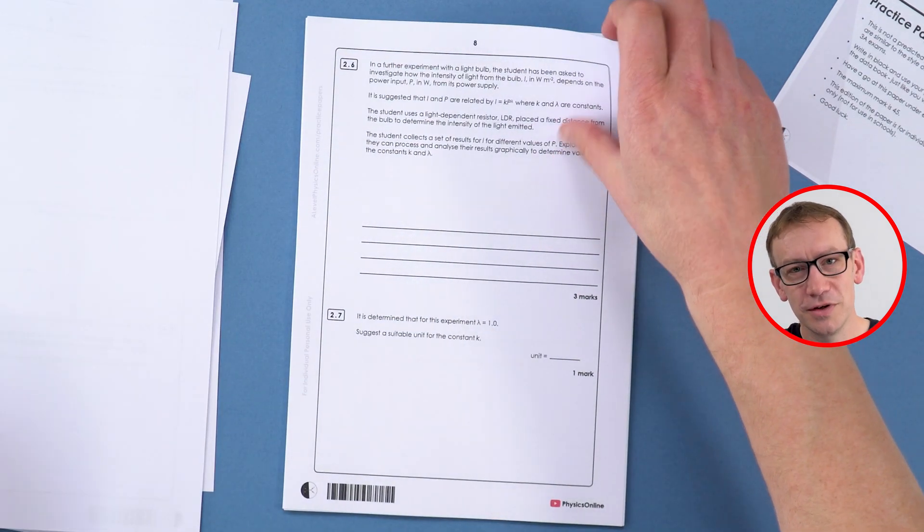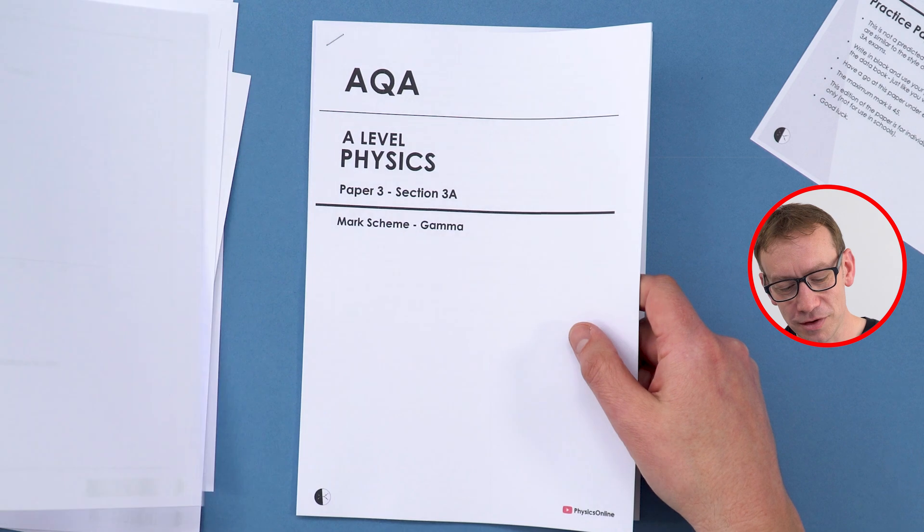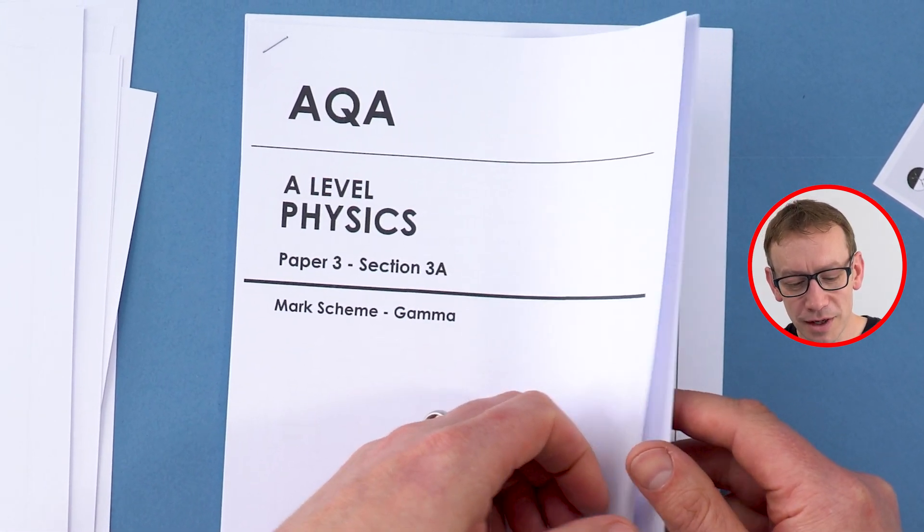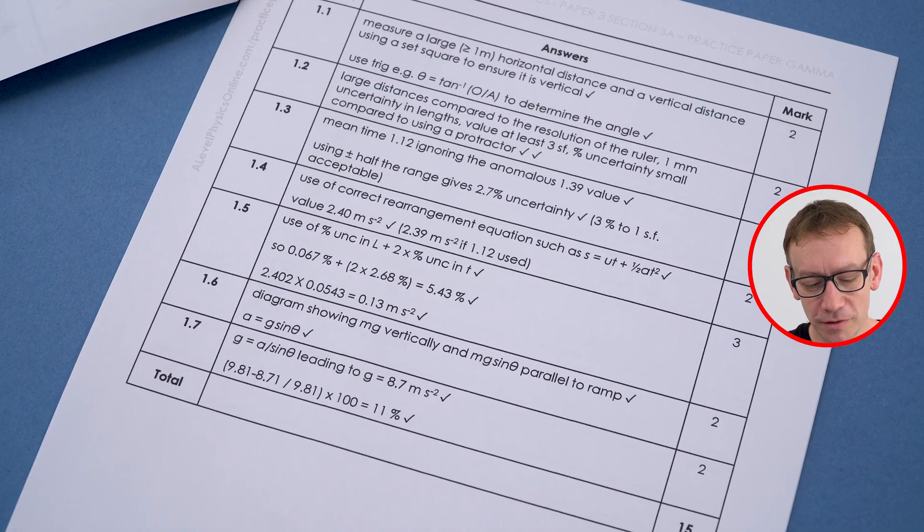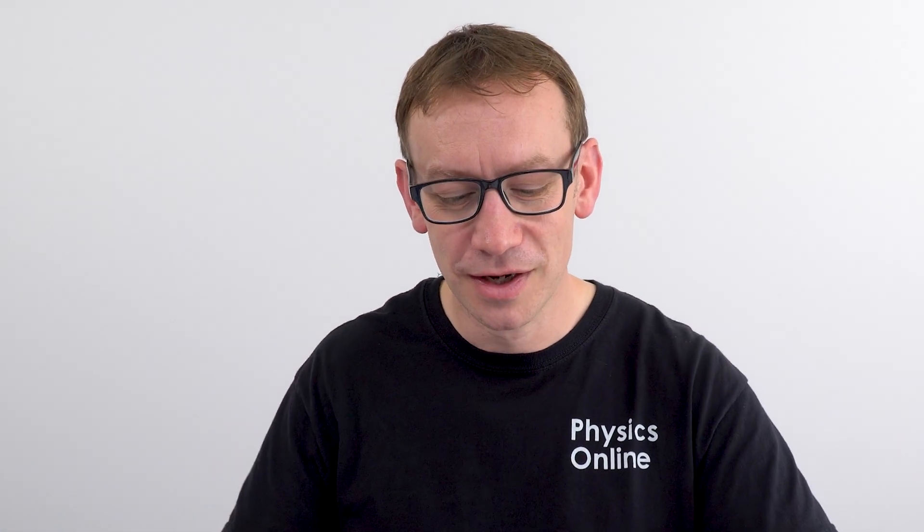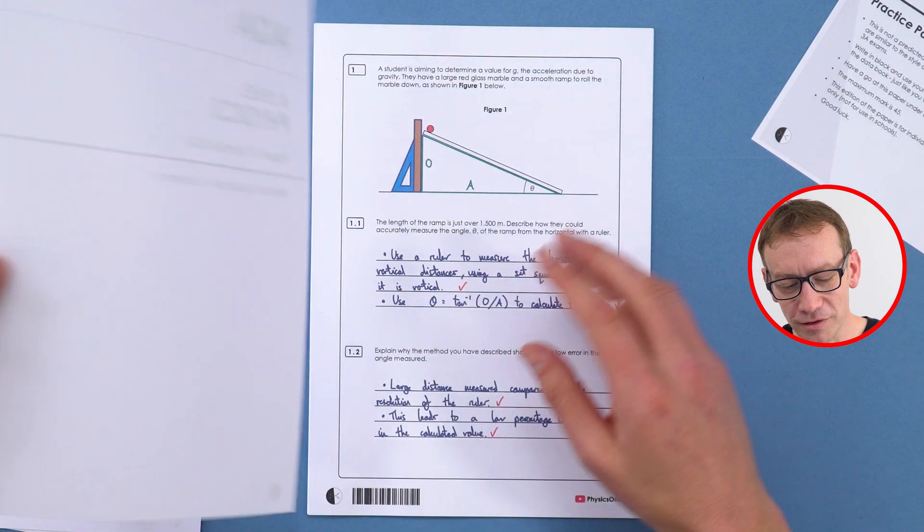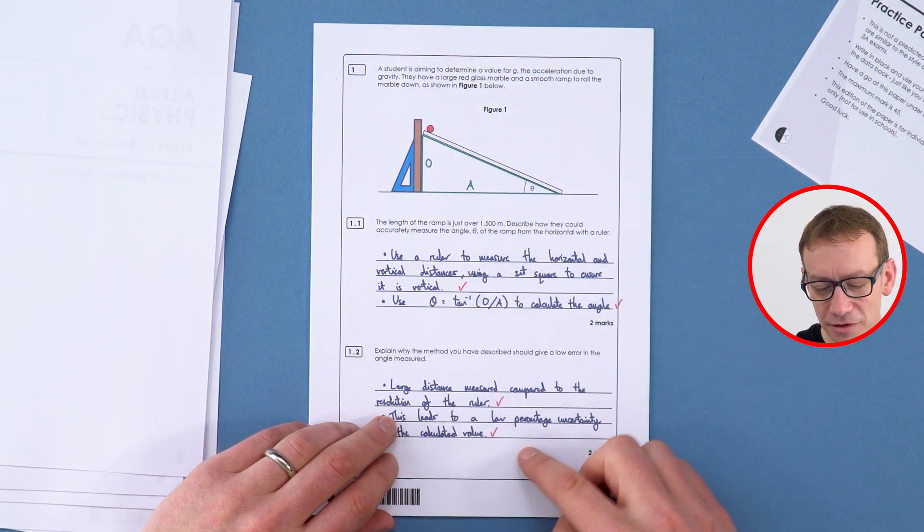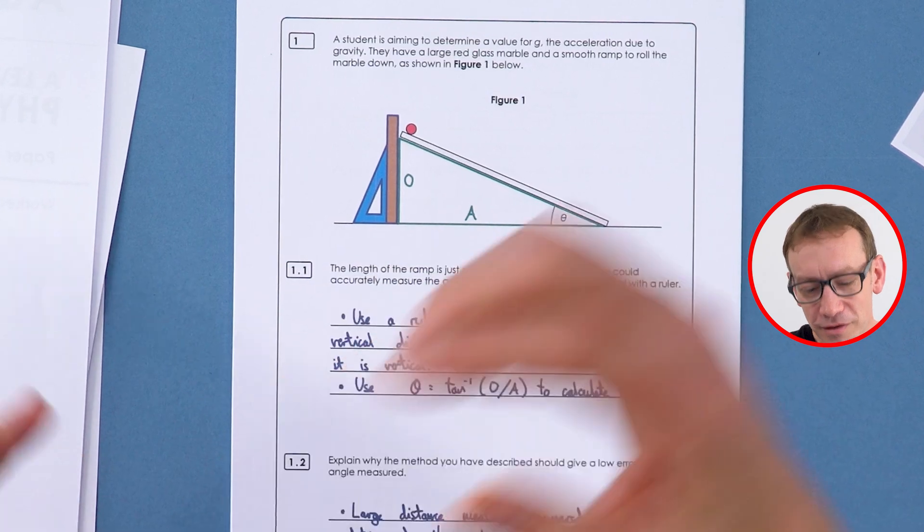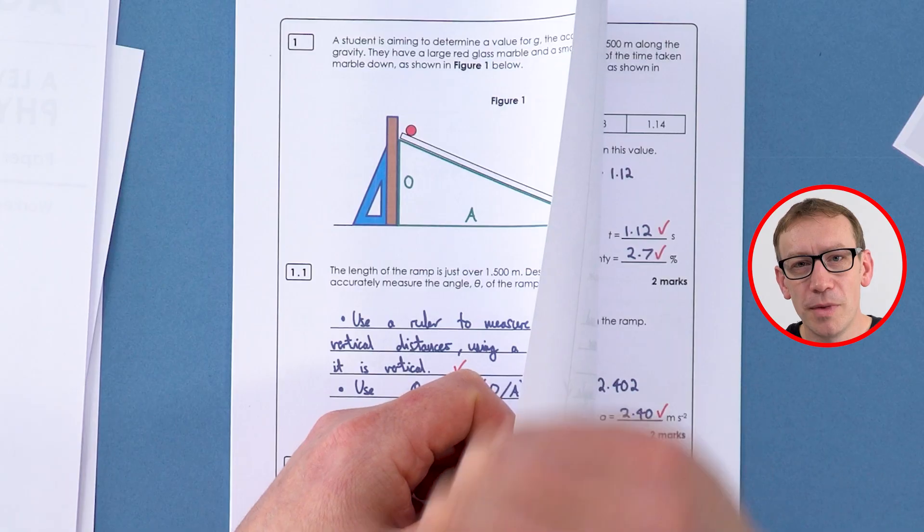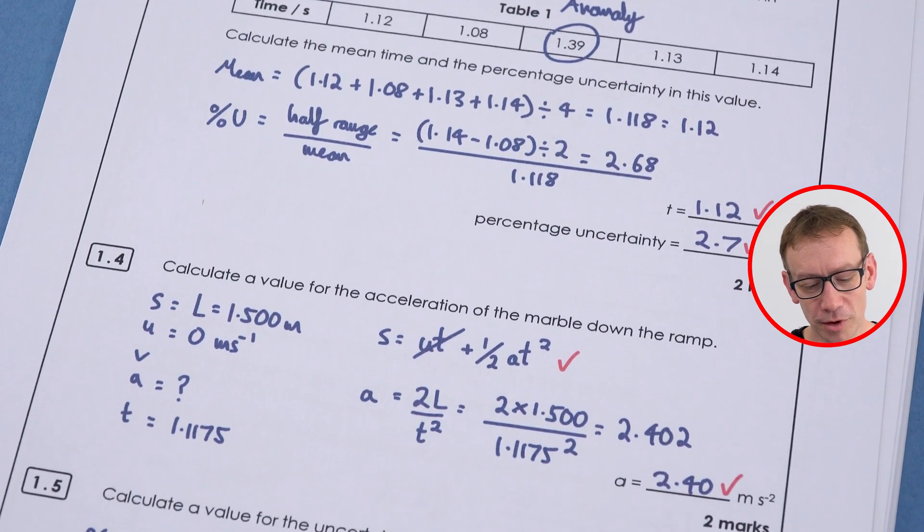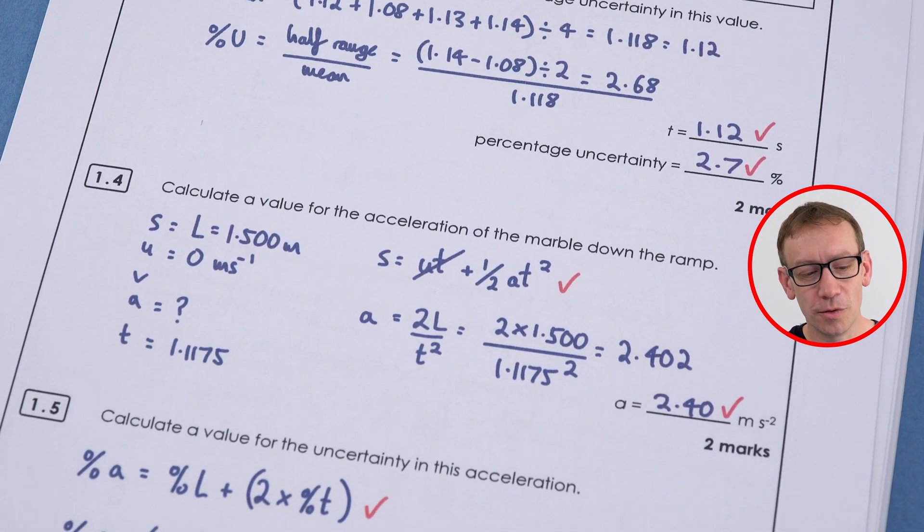In addition to the questions which you'd expect, there's also a section where I have a mark scheme. This is hopefully relatively straightforward for you to use to kind of give yourself the marks available. But this is the thing that I think makes this a game changer: I have my worked solutions. There's a set of model answers that I've written that I think can really help explain what the mark scheme doesn't.